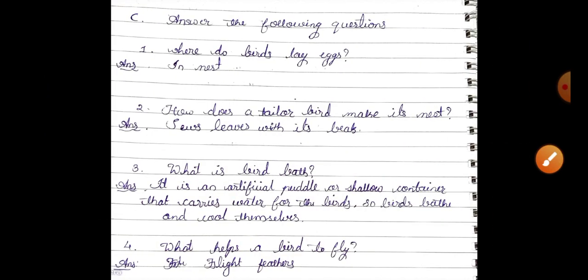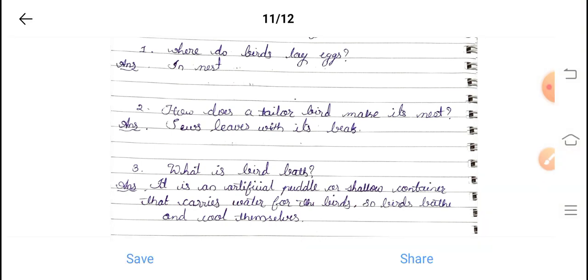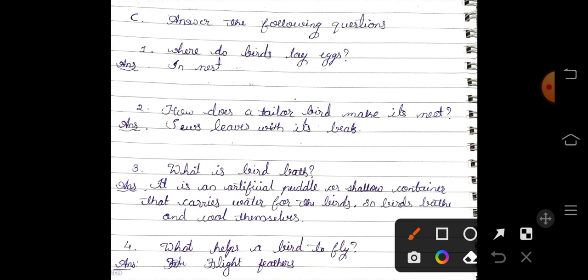Now let us discuss the question answers. Where do the birds lay eggs? In the nest only they lay their eggs. How does the tailorbird make its nest? With the help of beak they weave the leaves. What is bird bath? It is an artificial puddle or shallow container that carries water for the birds so birds can bathe and cool themselves. What helps birds to fly? Feathers help birds to fly.